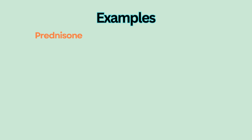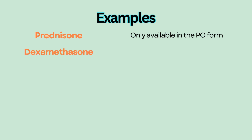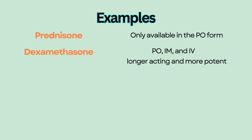Steroids come in many forms such as PO, IV, IM, inhaled, nasal spray, and topical. Prednisone is an oral steroid available only in PO form. Dexamethasone is available in PO, IM, and IV form; it is longer acting and more potent than prednisone, and is commonly used to reduce swelling and inflammation in the brain and spinal cord injury.